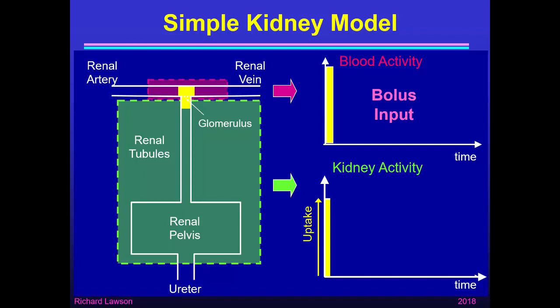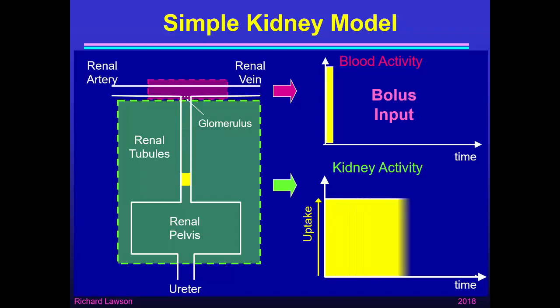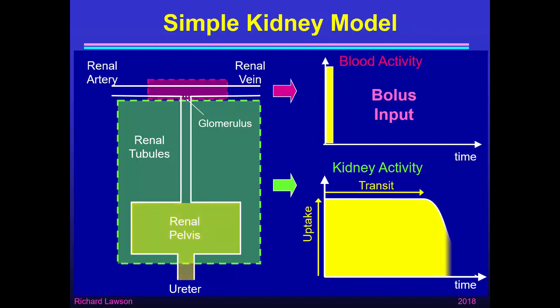Some activity appears in the green region. Over the next few seconds the bolus of activity will leave the renal vein, but it takes several minutes to pass down through the renal tubules, which have quite a slow flow. During those minutes the amount of activity in the green region remains constant as the bolus transits slowly through the tubules. When it gets to the renal pelvis it mixes with urine, becomes diluted, and gets washed out down through the ureter, so the activity remaining in the green region falls, showing elimination from the kidney.